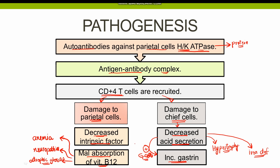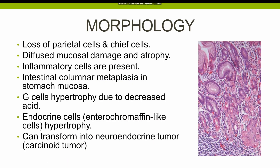The severe cases of autoimmune gastritis result in atrophic gastritis. The histological picture reveals loss of parietal cells and chief cells, hence decreased intrinsic factor and decreased hydrochloric acid production. In addition, there is diffuse mucosal damage and atrophy in severe cases. The main inflammatory cells present in autoimmune gastritis include lymphocytes, plasma cells, and macrophages. Minimal neutrophils are also present in certain cases.